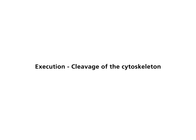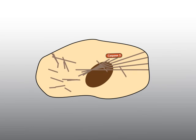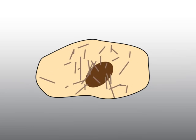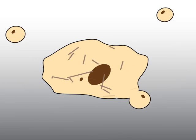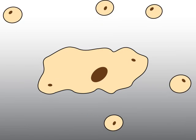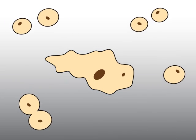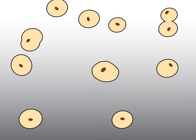Execution — cleavage of the cytoskeleton: Caspase 3 cleaves many other proteins, such as proteins of the cytoskeleton, and the cell loses its structure. Other proteins then cause the cell to collapse into vesicles, the so-called apoptotic blebs. Most blebs contain mitochondria and portions of the nucleus including DNA. These components allow energy to be maintained and new proteins synthesized, enabling rapid break-up of the cell and preventing an inflammatory reaction in the surrounding tissue.